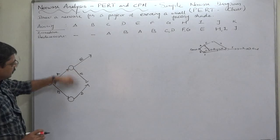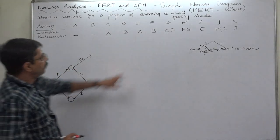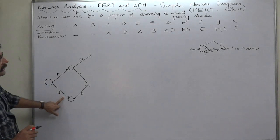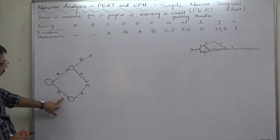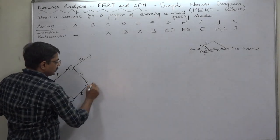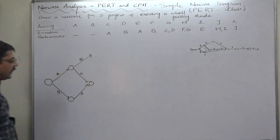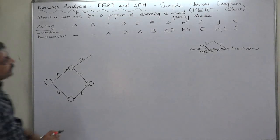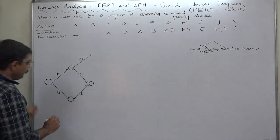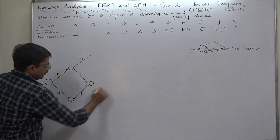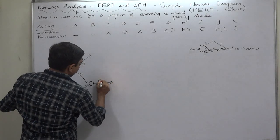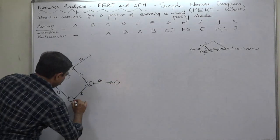Now it is turn of F. F also starts only after end of B, but this F and the next G both are going to be the common predecessors of H. So we need to merge them in the next stage. If this is G, it will be like this—F.